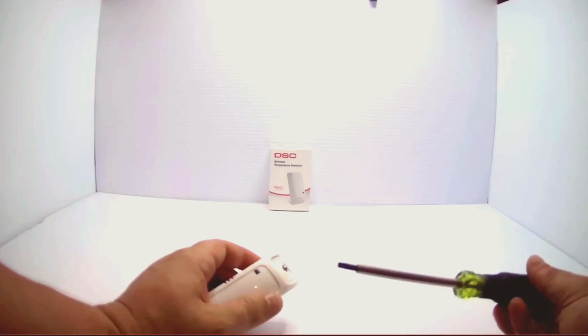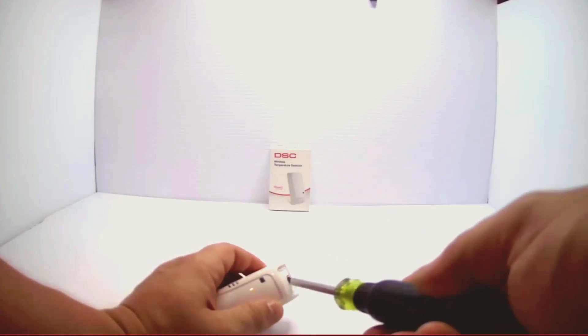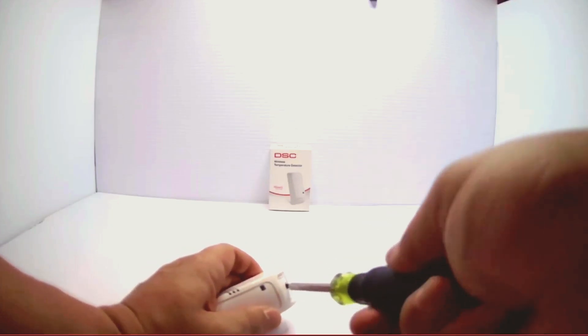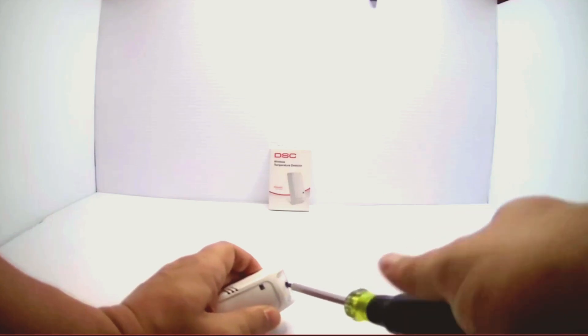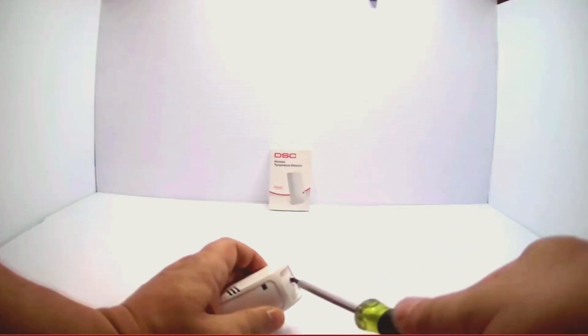Next, you'll expose a Phillips screw. You just want to loosen that screw, and the cover will come right off.